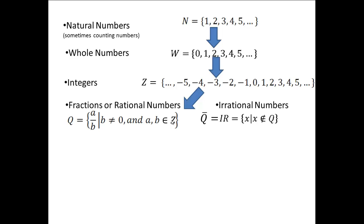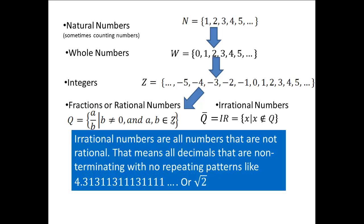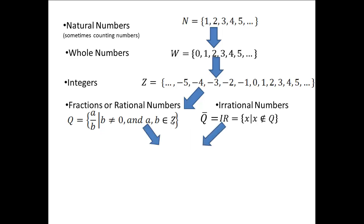Irrational numbers are the complement of rational numbers — all numbers that are not rational numbers. Decimal numbers that are not rational numbers are called irrational numbers. Irrational numbers are all decimal numbers that are non-terminating with no repeating pattern, like square root of 2.